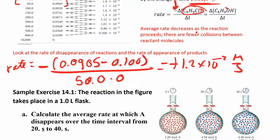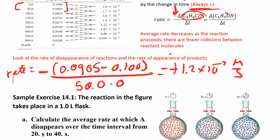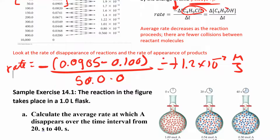The average rate decreases as the reaction proceeds. If you look at the rates, they decrease as the reaction goes on, because the molecules are getting used up and it's harder to find them. So you're going to have fewer collisions later on in the reaction.